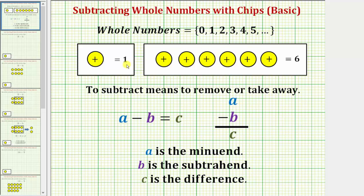We can model whole numbers using chips by letting one positive chip equal 1, and therefore 6 positive chips equals 6.